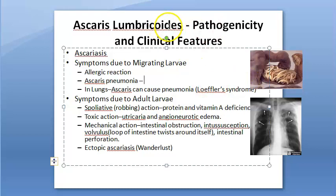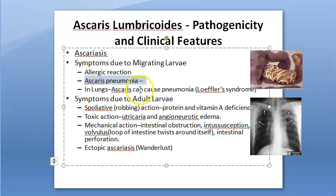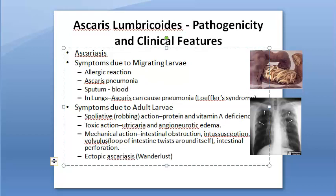The clinical features of ascariasis are divided into symptoms due to migrating larvae and symptoms due to adult worms. Due to migrating larvae, there can be an allergic reaction and Ascaris pneumonia, characterized by low-grade fever, dry cough, asthmatic wheezing, urticaria, eosinophilia, Löffler lung infiltration visible on chest X-ray.